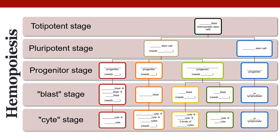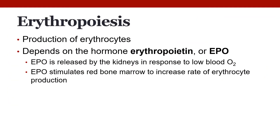Erythropoiesis specifically refers to the production of erythrocytes, regulated by the hormone erythropoietin (EPO). More erythrocyte progenitors are made in your bone marrow every day than you actually use. The level of EPO in the blood determines how many of those bone marrow progenitors mature into actual red blood cells.